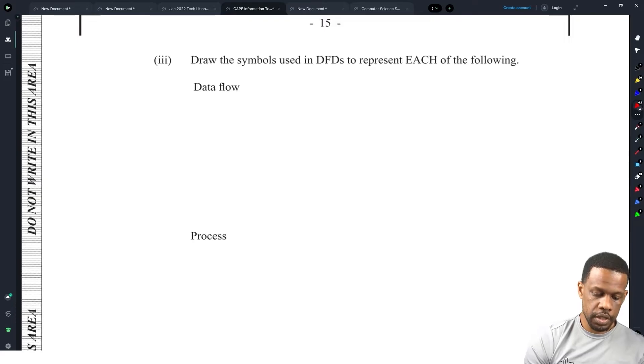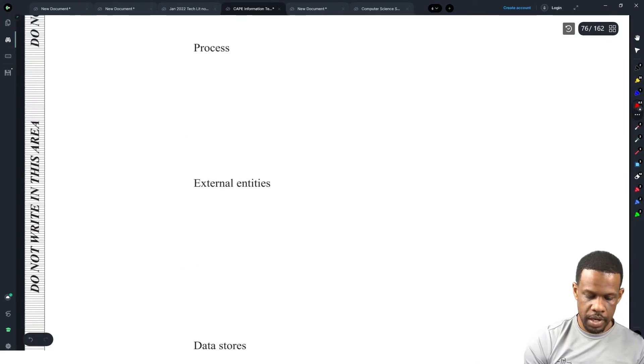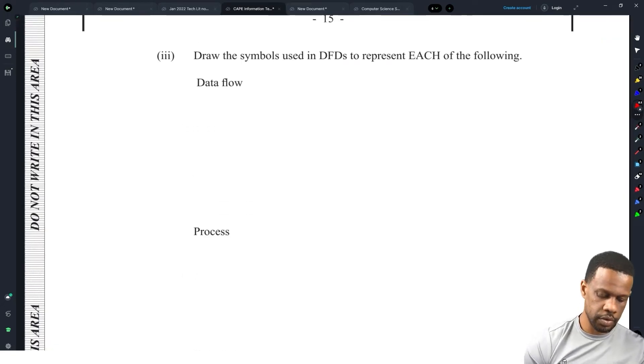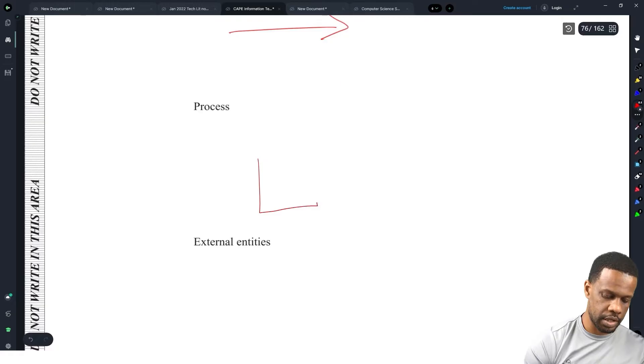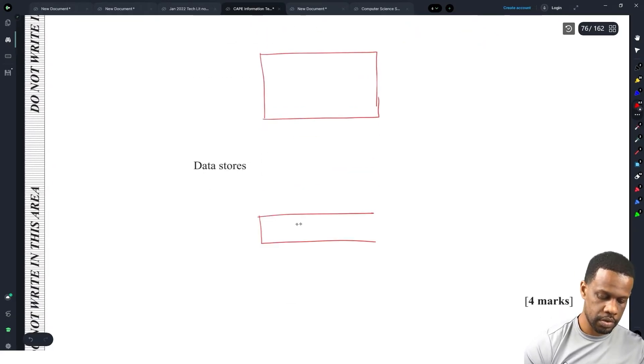Draw the symbols using DFDs to represent each of the following: data flow. Four marks to put an arrow for data flow. A process looks like a rectangle with half a circle on top of it, or sometimes it is an oval. An external entity is a rectangle, and a data store is a box with a line like that. Just be giving away marks.